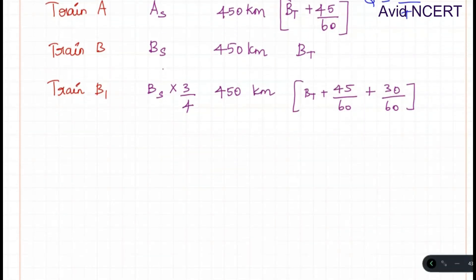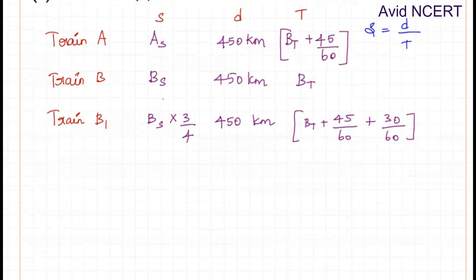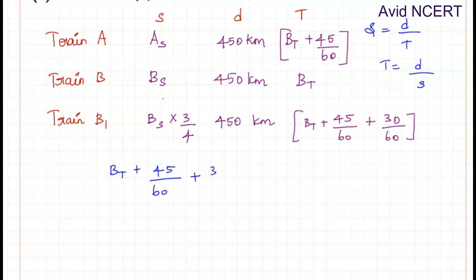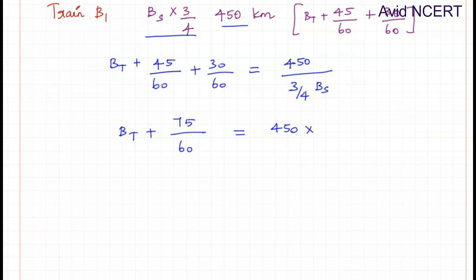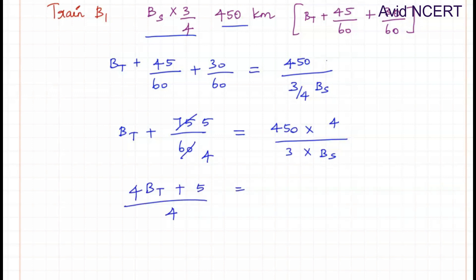Using the formula speed equals distance by time, we can equate: BT plus 45 by 60 plus 30 by 60 equals 450 divided by (3 by 4 times BS). So BT plus 75 by 60 equals 450 times 4 divided by 3 times BS. Simplifying with LCM — 5 times 15 is 75 and 4 times 15 is 60 — so 4BT plus 5 divided by 4 equals 450 times 4 divided by 3 times BS.